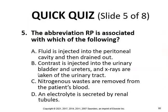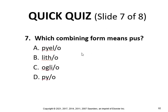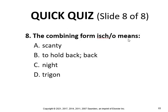Sample quiz questions: The abbreviation RP is associated with contrast injected into the urinary bladder and ureters with x-rays taken of the urinary tract. CAPD involves fluid injected into the peritoneal cavity and then drained. Hemodialysis removes waste from the patient's blood. The combining form dips means thirst. Pi means pus. Isch/o means to hold back.